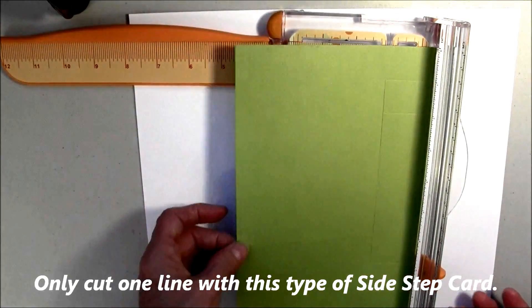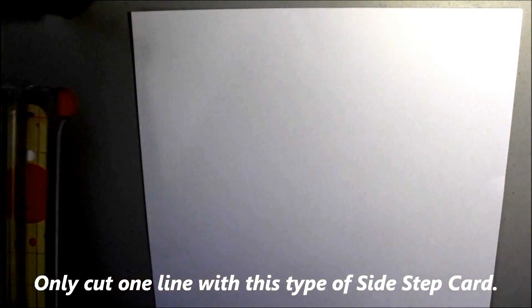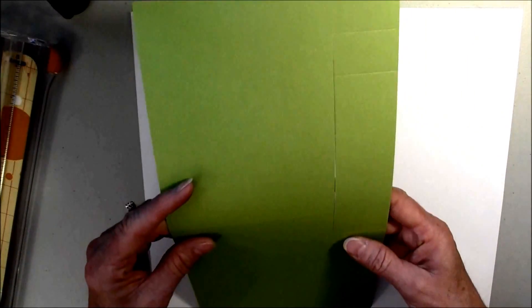And make sure it's all lined up really well. But you're going to start right here at the 1½, 1½ mark. And you're going to just cut between the 1½ one all the way to the 7½ one. Just one line, because this is your side step one. So, that's all you have to do is cut the one line. Now, if you're doing a different kind, you'll do a different cut.